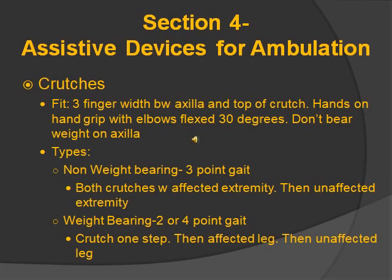Section 4: assistive devices for ambulation. General information: use non-slip socks, assess for risk of orthostatic hypotension, remove all clutter from the room, ensure rubber tips are on the devices, and get a physical therapist consultation.